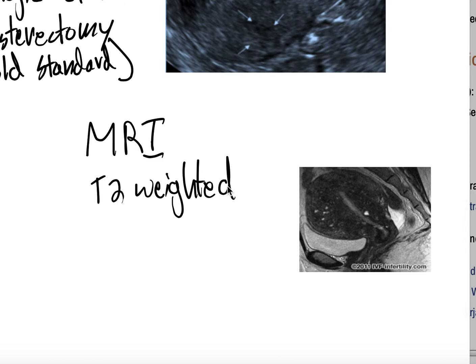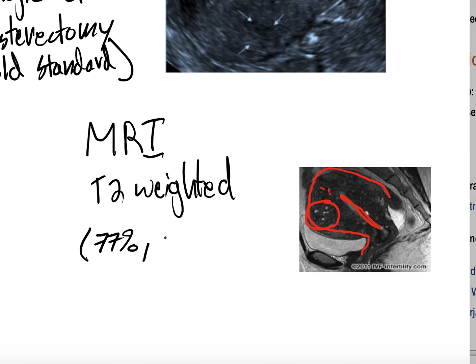The next modality is MRI — specifically the T2-weighted sequence. On T2 MRI, you see the dark myometrium with abnormal lighter white specks of endometrial tissue within it. MRI is not much better than transvaginal ultrasound: it's 77% sensitive and 89% specific. So specificity is better, but sensitivity is about the same and it will still miss many cases.